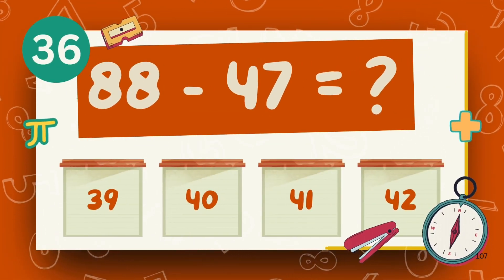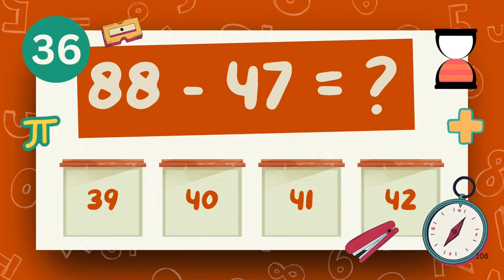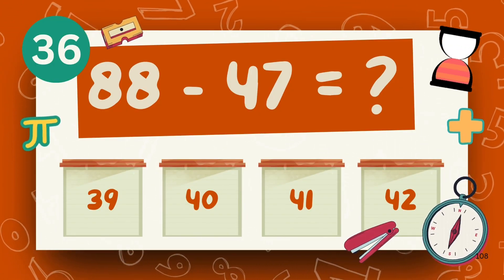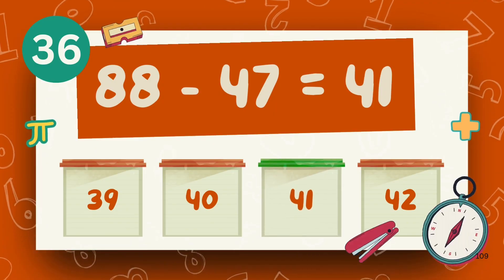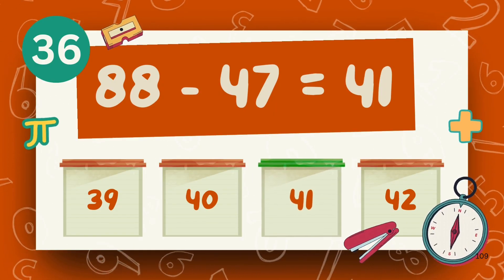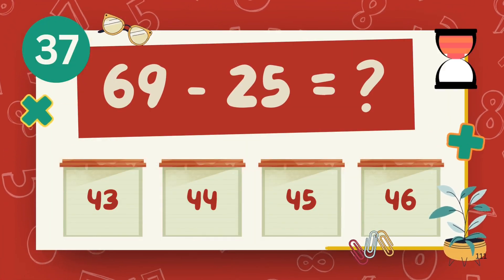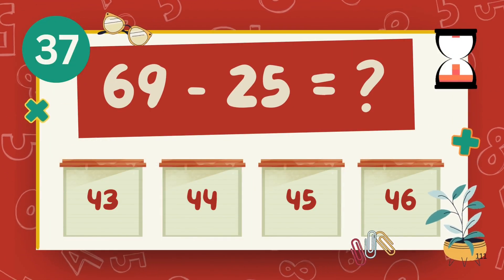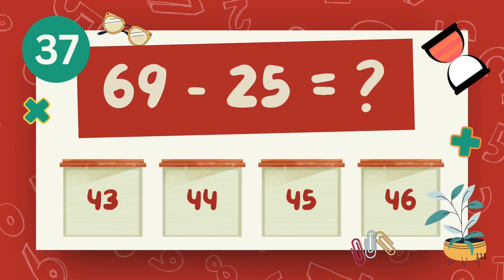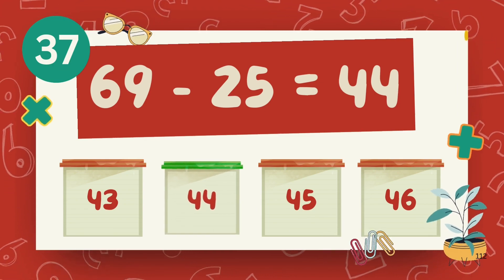What is eighty-eight minus forty-seven? The answer is forty-one. What is sixty-nine minus twenty-five? The answer is forty-four.